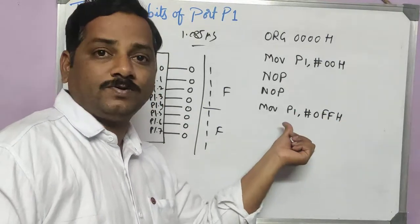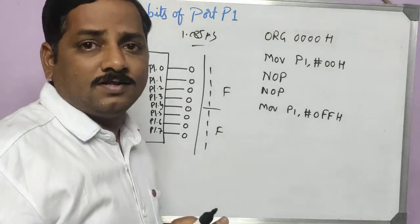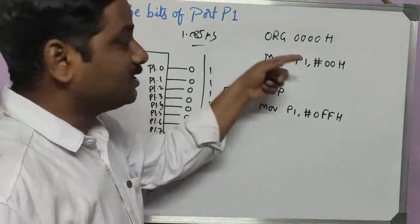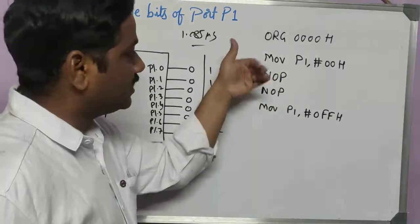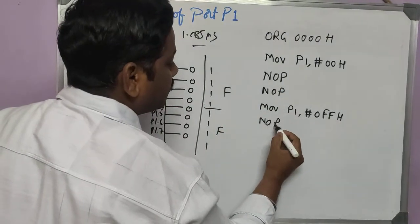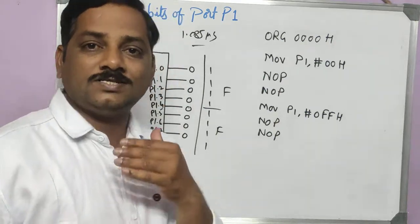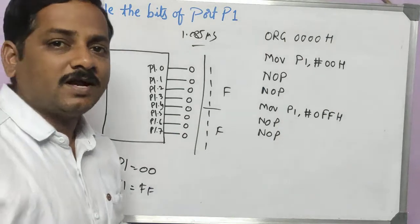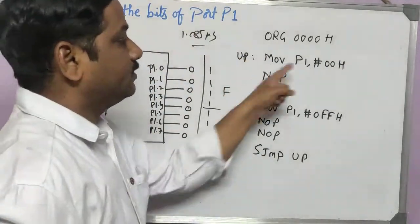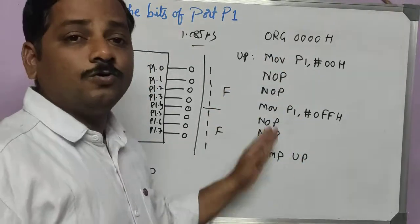After the NOPs execute, FFH is given to P1, so all bits become high — it goes from 0 to 1. Now I need to go back to 0 again because the question says to toggle continuously. They have not asked to toggle it only once. So I will repeat this cycle. But before jumping back, I will put two more NOPs so that FF is held for the same duration as 00H was held. Then I will use a short jump — SJMP — with a label called 'up' placed at the start of the loop. So it will loop back: 0, wait, 1, wait, 0, 1 — continuously toggling.